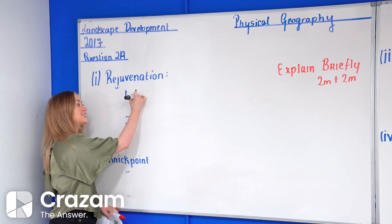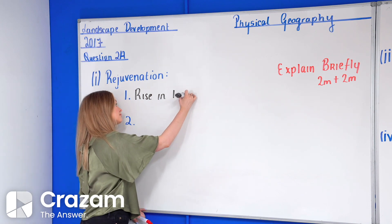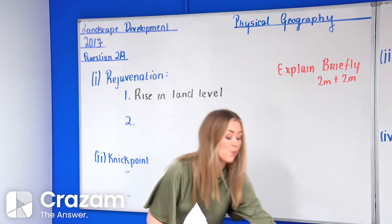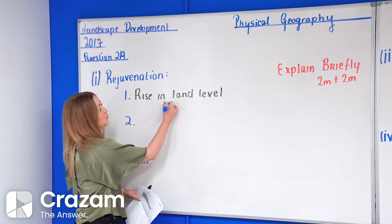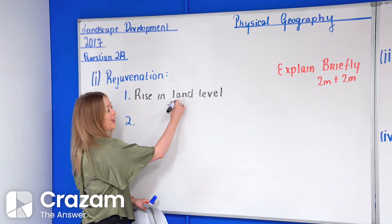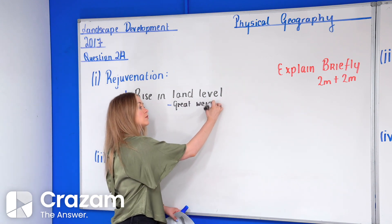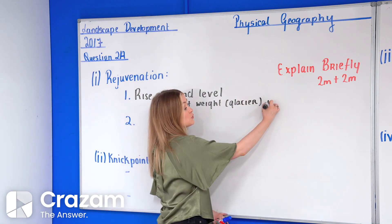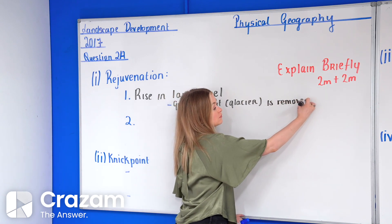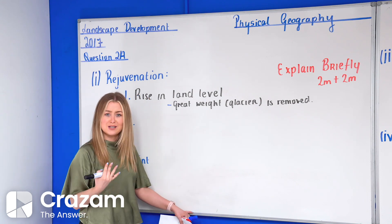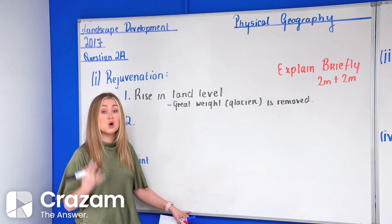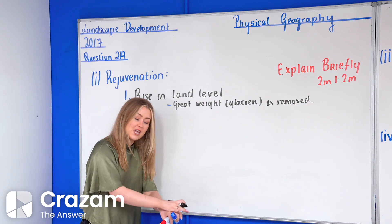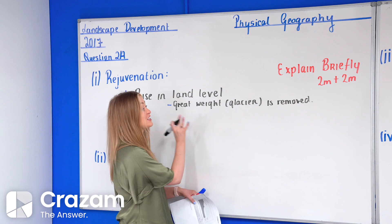Number one can be a rise in land level. Now you have to say to yourself why might there be a rise in land level. The reason for a rise in land level would be a great weight, and I'm going to put in brackets beside this, a glacier is removed. So there can be a rise in land level if there's some sort of great weight like a glacier removed. This rise in land level would have occurred at the end of the last ice age. So here what happens is kind of like a sponge when you take the pressure off it, it poofs back up.